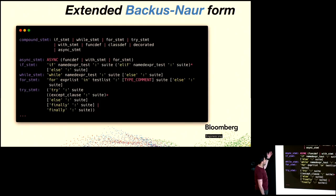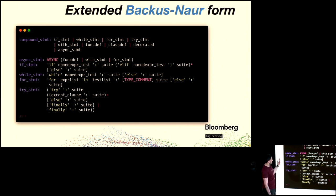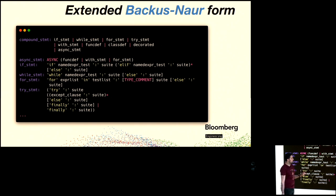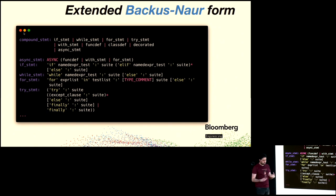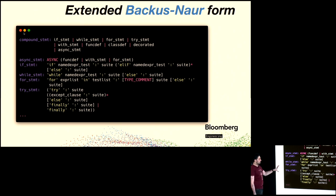Here's another part of the grammar showing compound statements. For example, an if statement is the word 'if' followed by something that evaluates to a condition, then a colon, and then what the grammar calls a 'suite' — what people normally recognize as a block. The idea is that we have this document with these kinds of rules that describe what is and isn't possible to write.